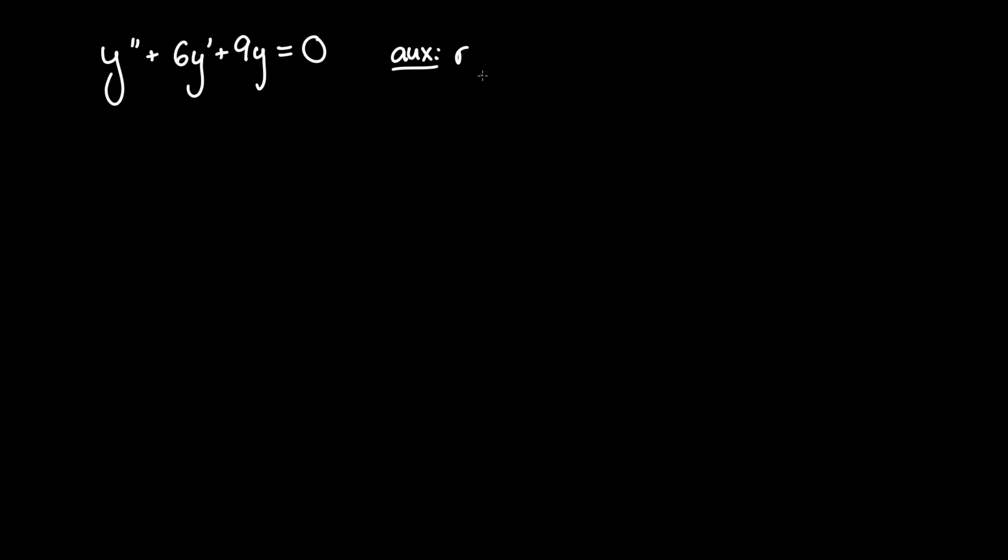to represent the amount of derivatives being taken to the independent variable. So if there is y double prime, that's two derivatives being applied to y, so we have r squared.